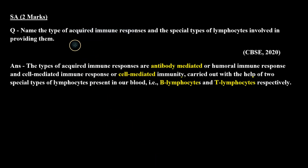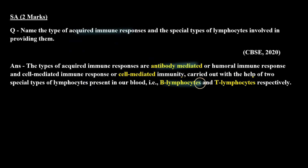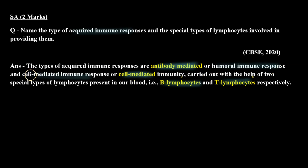Acquired immune responses are of two types. First, antibody-mediated, in which B lymphocytes are involved. Second, cell-mediated, in which T lymphocytes are involved. We also call these the humoral immune response and the cell-mediated immune response respectively.